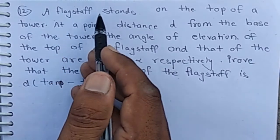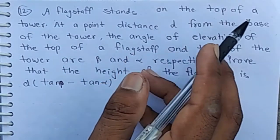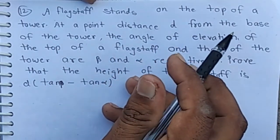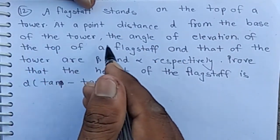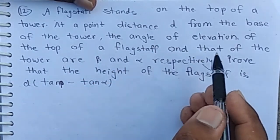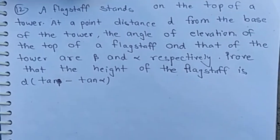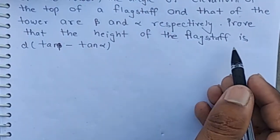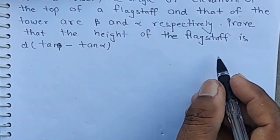Question number 12. A flagstaff stands on the top of a tower. At a point at distance D from the base of the tower, the angle of elevation of the top of the flagstaff and that of the tower are beta and alpha respectively. Prove that the height of the flagstaff is D times bracket tan(beta) minus tan(alpha).